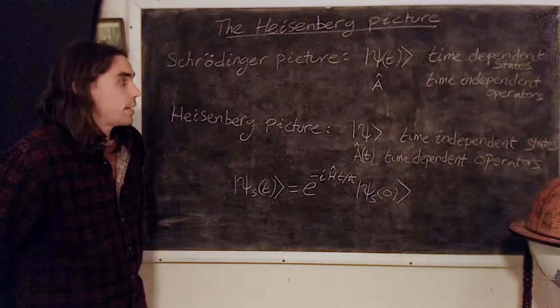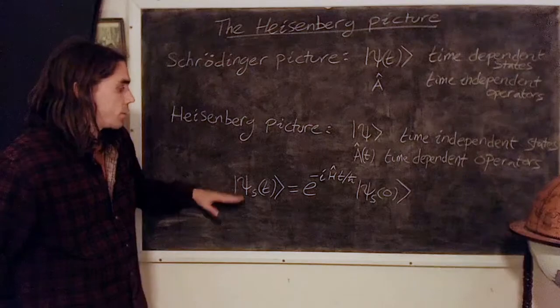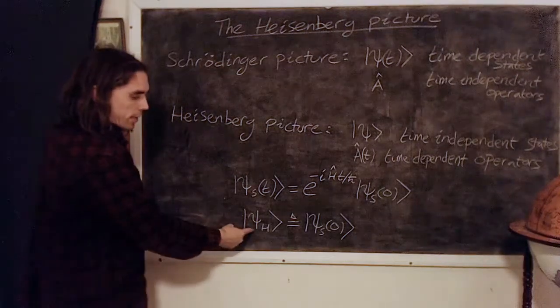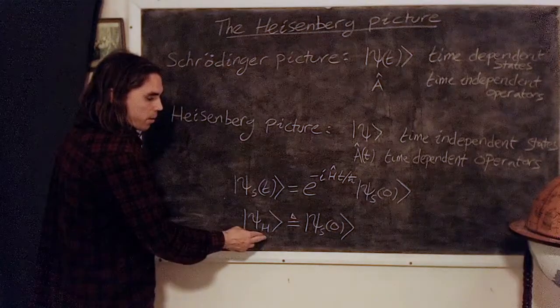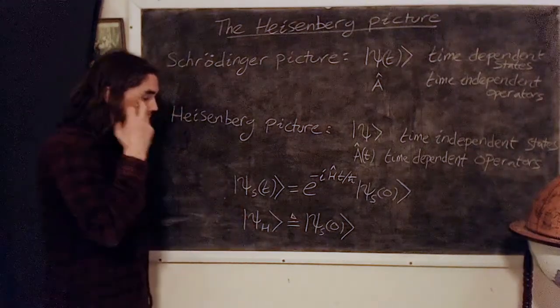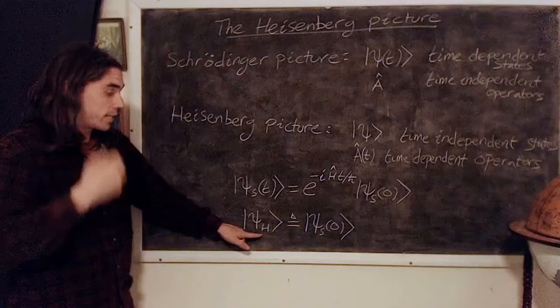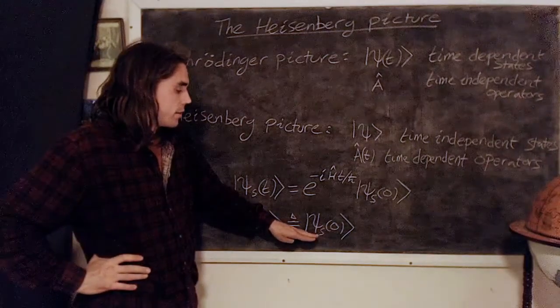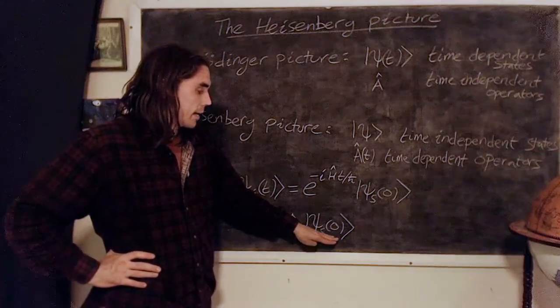A convenient choice to take to relate the Schrödinger picture to the Heisenberg is as follows: Let's define our time independent Heisenberg ket, our state |ψ_H⟩ for Heisenberg in the Hilbert space, by definition to be the Schrödinger state at time equals zero.